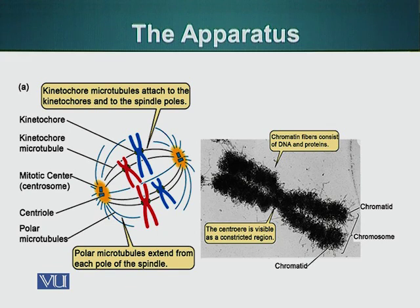The chromosome is a structure composed of the hereditary material DNA and also proteins. A special sequence of DNA called centromere is the region which is attached to the microtubules via a specific protein complex called kinetochore. Centromere is the sequence of DNA to which kinetochore proteins assemble.